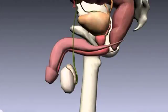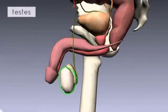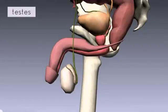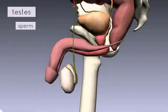We're going to begin with the testes, which are the primary sex organs of the males — akin to the ovaries in the females. The main functions of the testes are to produce sperm and to produce male hormones, so androgens, with the main one being testosterone.